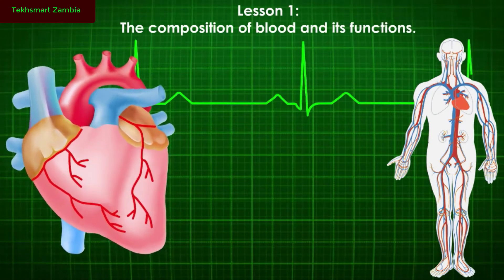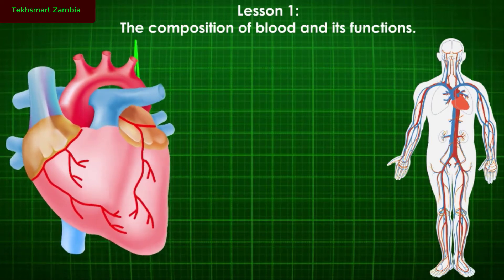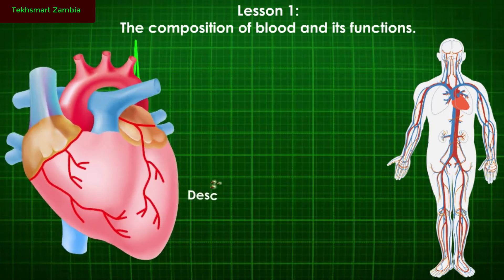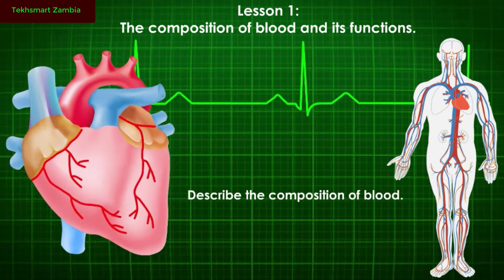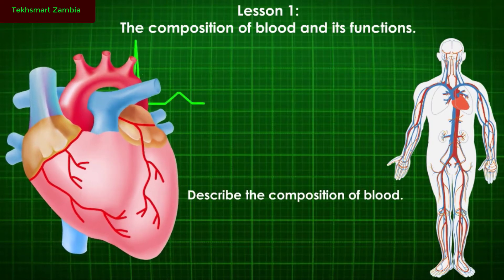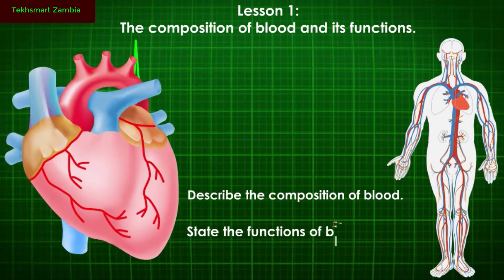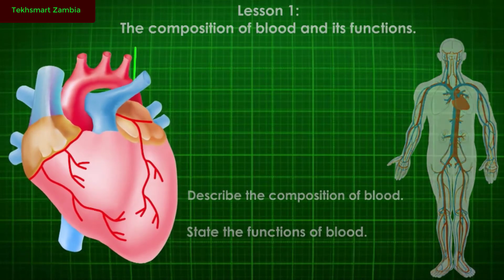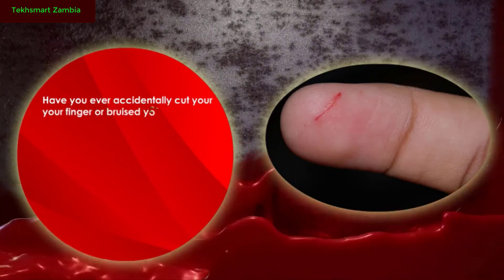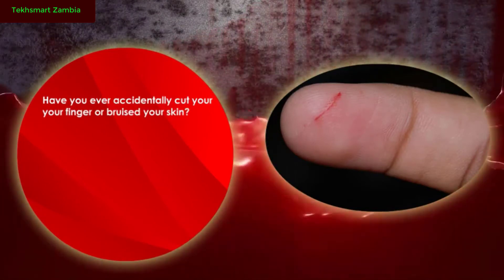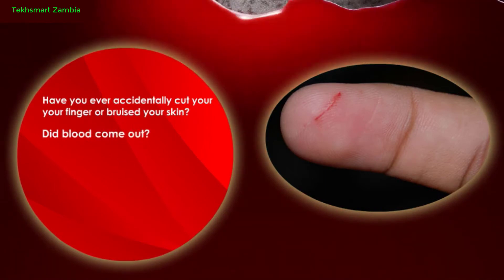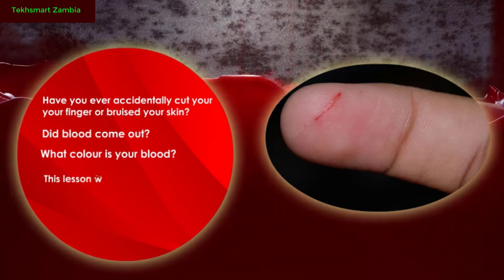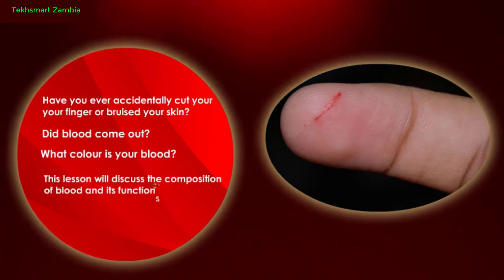Lesson one: the composition of blood and its functions. By the end of this lesson you should be able to describe the composition of blood and state its functions. Have you ever accidentally cut your finger or bruised your skin? Did blood come out? What color is your blood? This lesson will discuss the composition of blood and its functions.